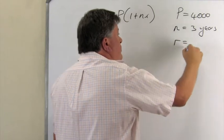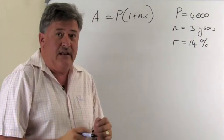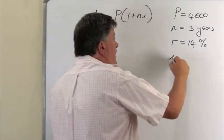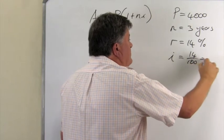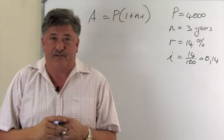The interest rate R was given to us at 14%. Remember again, you are not allowed to substitute a percentage into the formula. So I is equal to 14 over 100, which is 0.14. And you can substitute that into the formula.